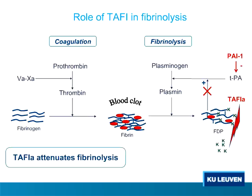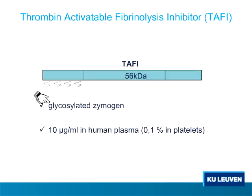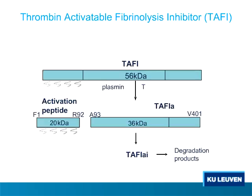The cofactor function of the fibrin degradation products is abolished, so TAFI attenuates fibrinolysis. TAFI is secreted by the liver and it is a glycosylated zymogen. The glycosylation is most heavy in the amino-terminal part of the protein, and the concentration in healthy individuals is about 10 micrograms per ml or 180 nanomolars. Upon activation of TAFI by trypsin-like enzymes such as plasmin, thrombin, or the thrombin-thrombomodulin complex, the activation peptide is released and the TAFI-A moiety is active. However, the active conformation is very unstable and converts very rapidly into an inactive form, which is further cleaved by trypsin-like enzymes.